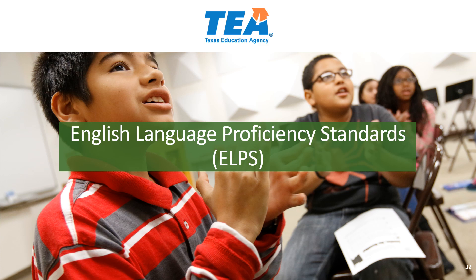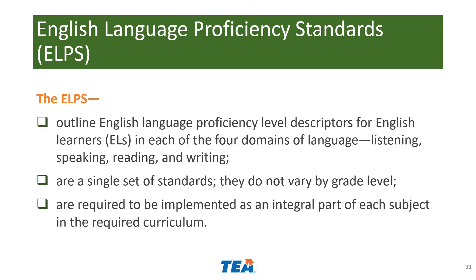Now let's turn our attention to the English Language Proficiency Standards, or ALPS. For those not familiar with them, the ALPS are a separate set of standards from the TEKS. They outline proficiency level descriptors for English learners, focused on the four domains of language: listening, speaking, reading, and writing. Unlike the TEKS, they don't vary by grade level — it's a single set of standards for K-12. They are required to be implemented in each subject of the required curriculum, and for particular subjects and grade levels, there are review requirements for the ALPS.